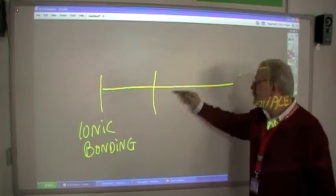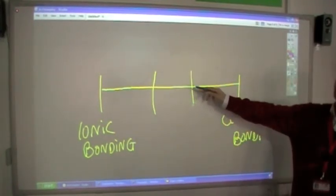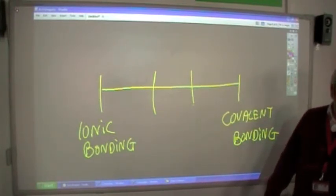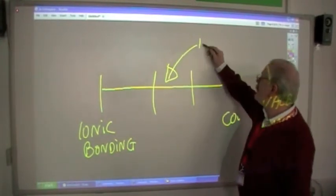But there's also something in between, which is not quite ionic, not quite covalent, something that shares the properties of the two types of bonding. So we have some kind of intermediate.